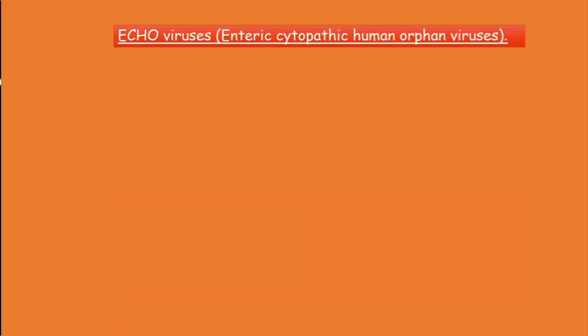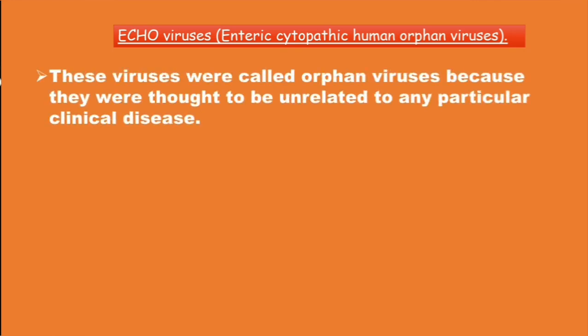Now let's look at the echoviruses. ECHO stands for Enteric Cytopathic Human Orphan viruses. They were called orphan viruses because they were thought to be unrelated to any particular clinical disease. Coxsackie A, coxsackie B, and echovirus are related, so let's differentiate them clinically.